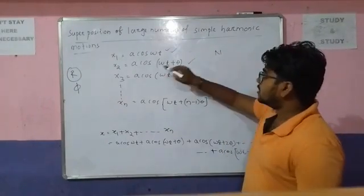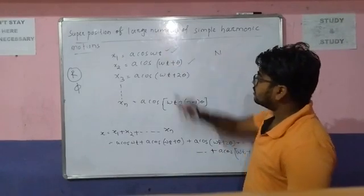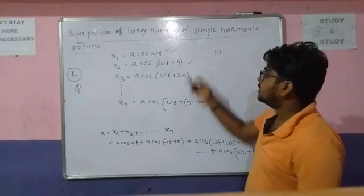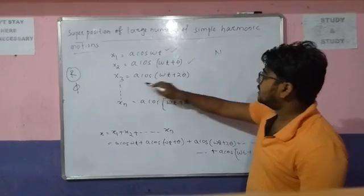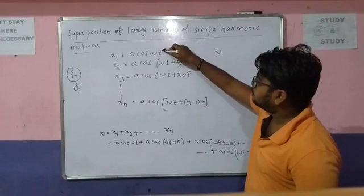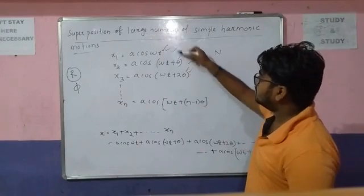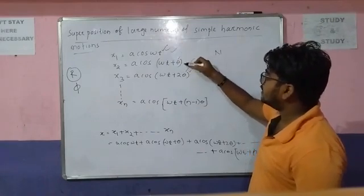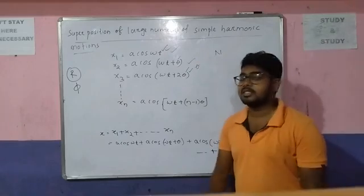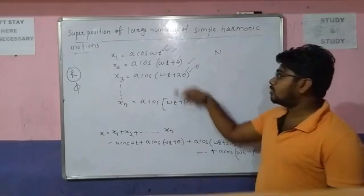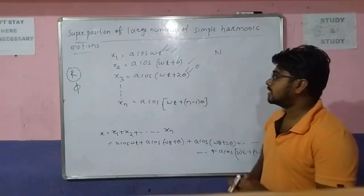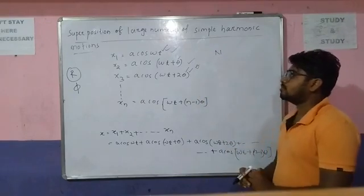What is the difference between the first and second equations? That is the phase difference of theta. In the third equation, the phase difference is 2 theta — meaning from the first to the third, the phase difference is 2 theta, and between the second and third it is theta. So we can say the simple harmonic motions have a successive phase difference of theta.